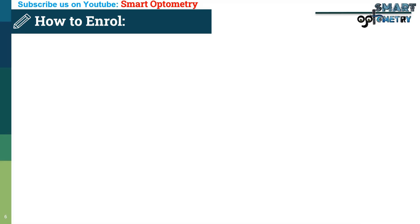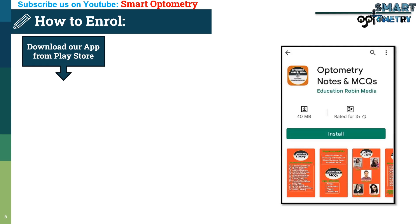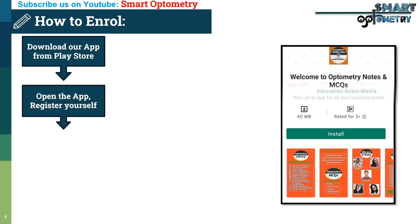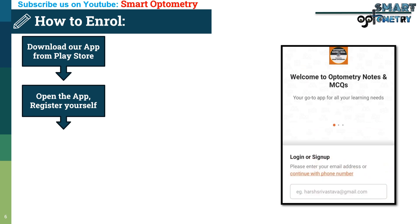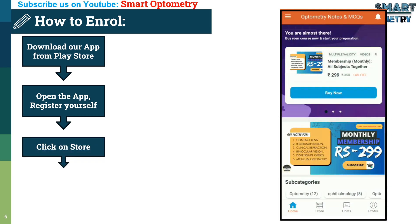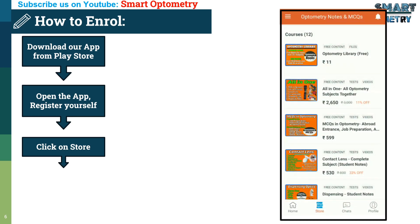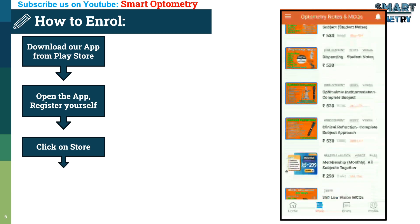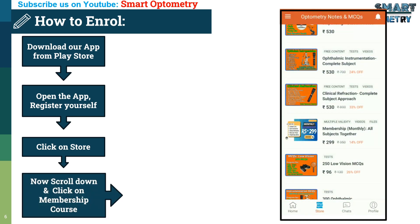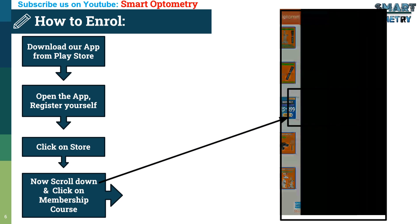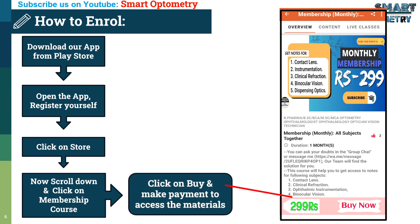Here is how to enroll in the monthly membership. First, download our app from the Play Store — the app download link and monthly membership course link are available in the description. After downloading, open the app and register yourself. Then click on the store where you will find all available courses. Scroll down, click on the membership course, then click buy and make the payment to get access to the materials.